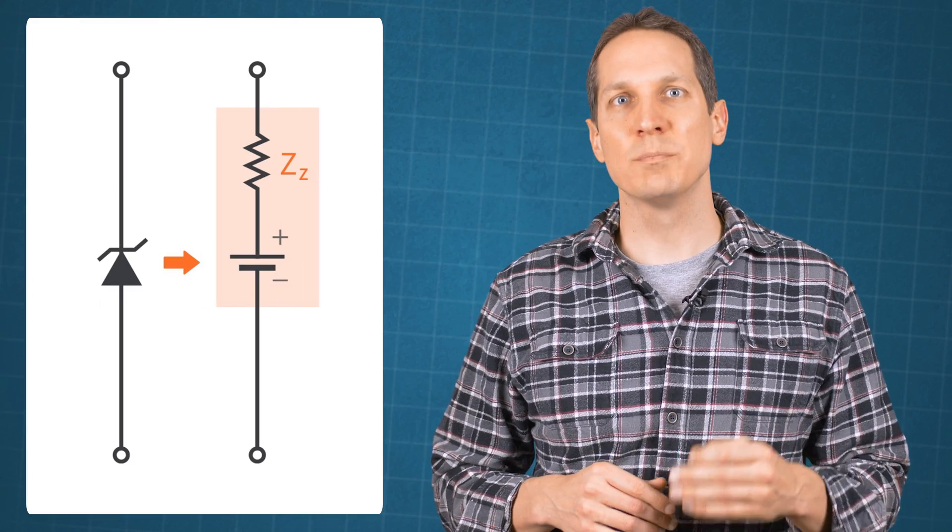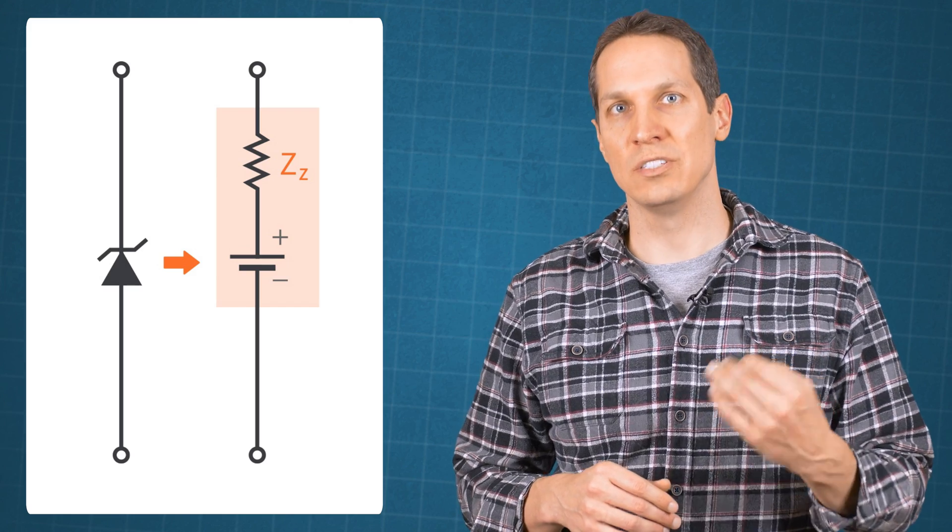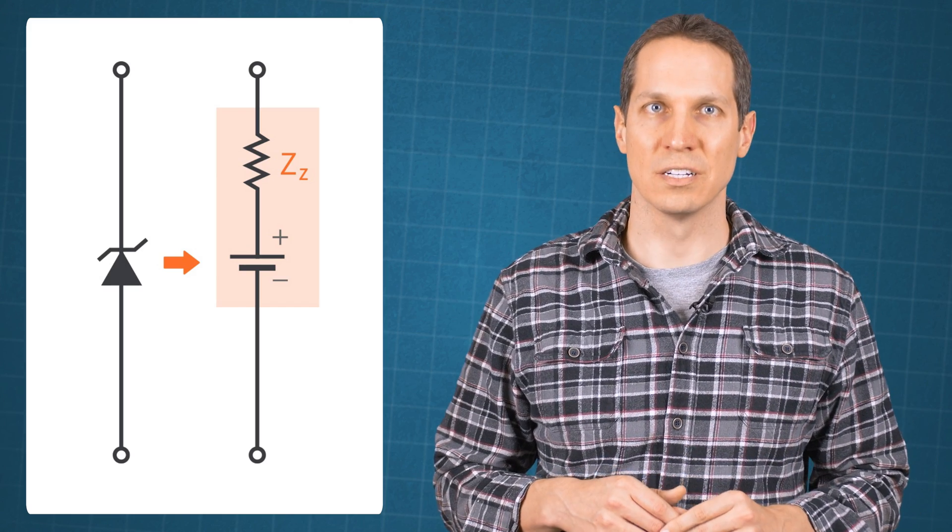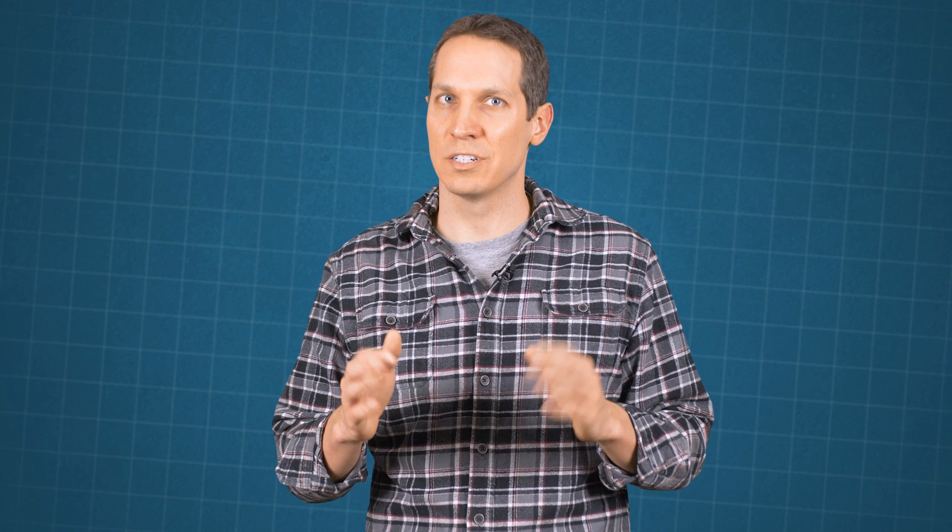By Ohm's law, the Zener impedance is equal to the ratio of the change in Zener voltage to the change in Zener current. The Zener impedance is usually specified at the Zener test current. Most of the time, this Zener impedance is a small constant over a full range of Zener current values.